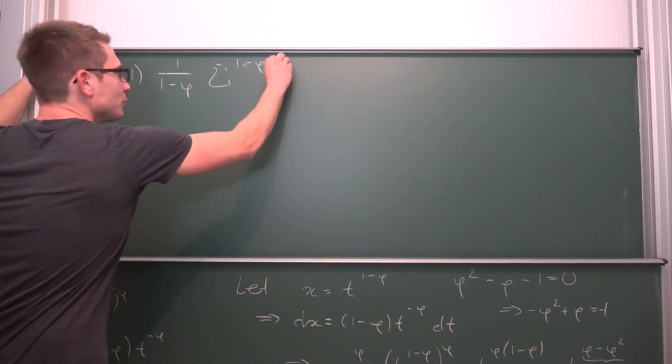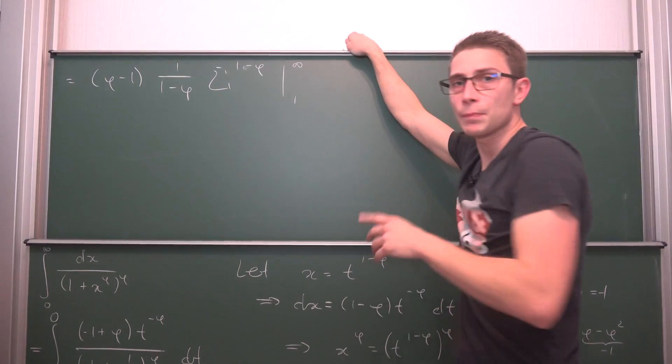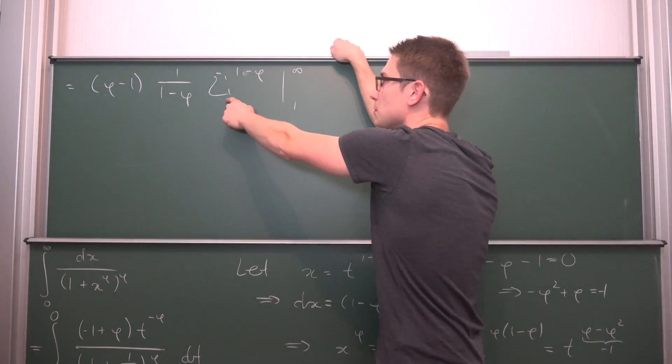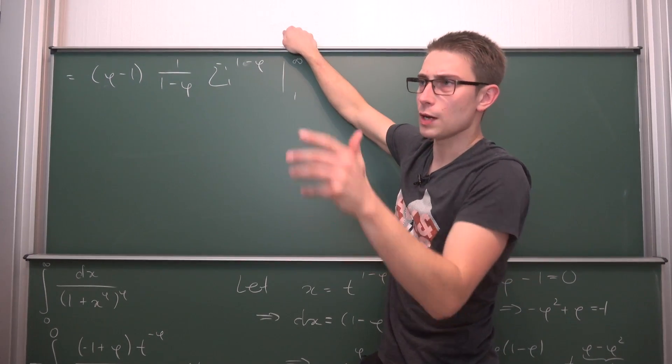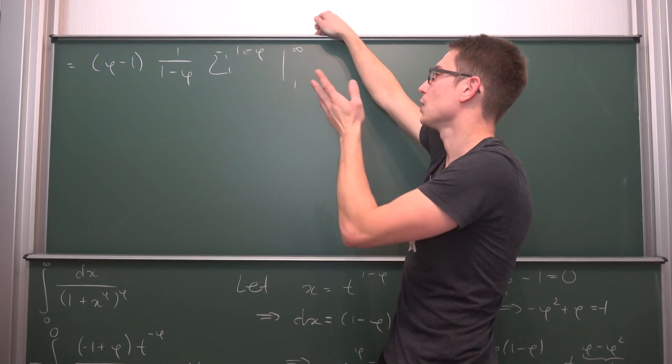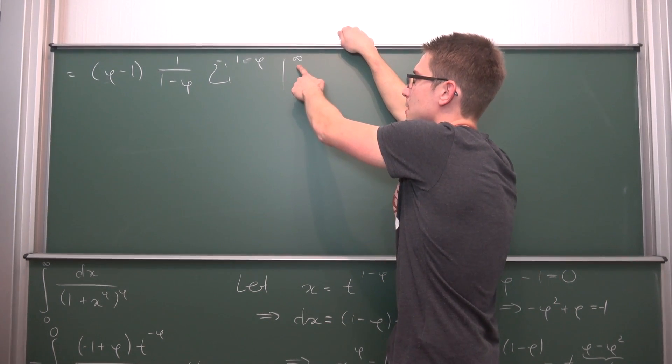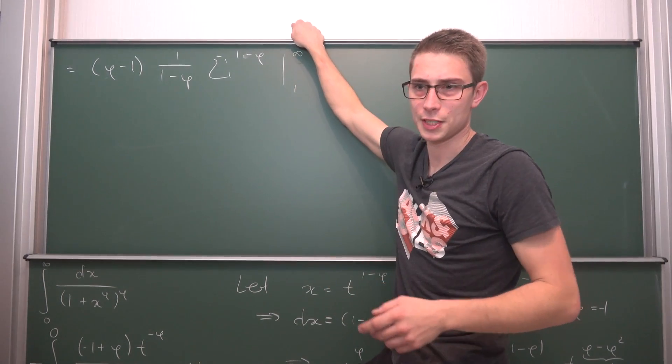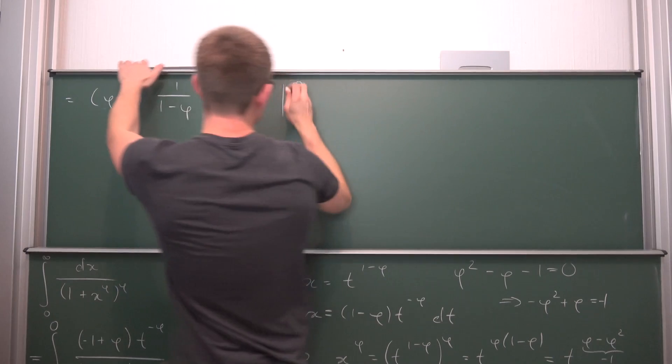And all of this evaluated from 1 to infinity. Now once again, please note that this sigma to the 1 minus phi is roughly 1 over sigma, so something like 1 over sigma. Now what happens if we take the limit as sigma approaches infinity? Then this is 1 over infinity, which goes to 0 overall.